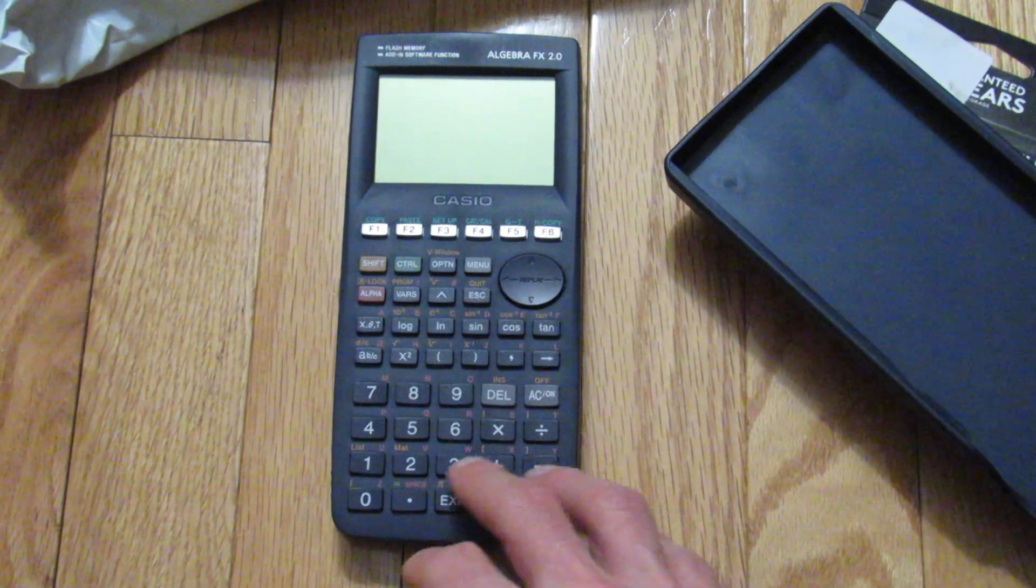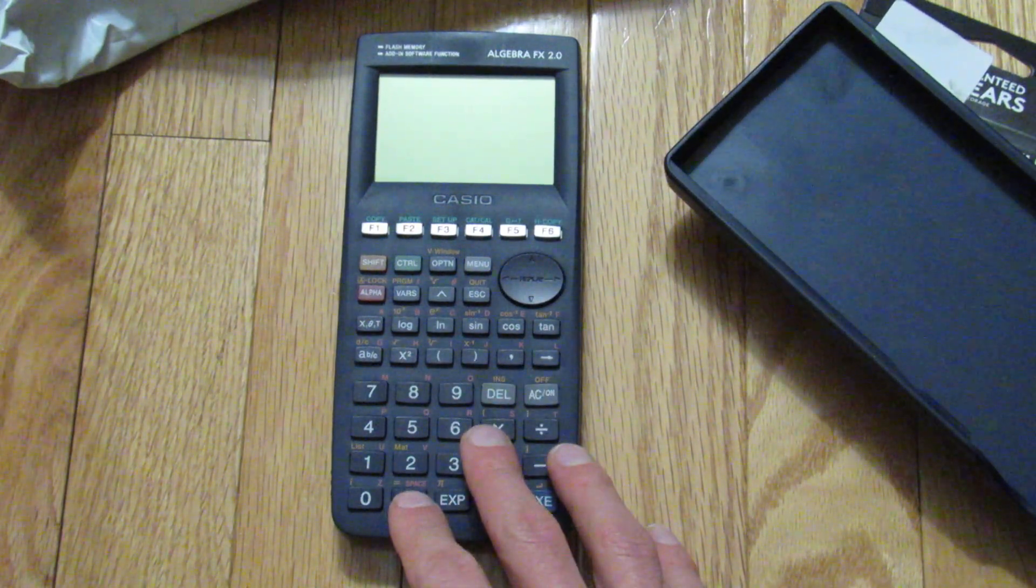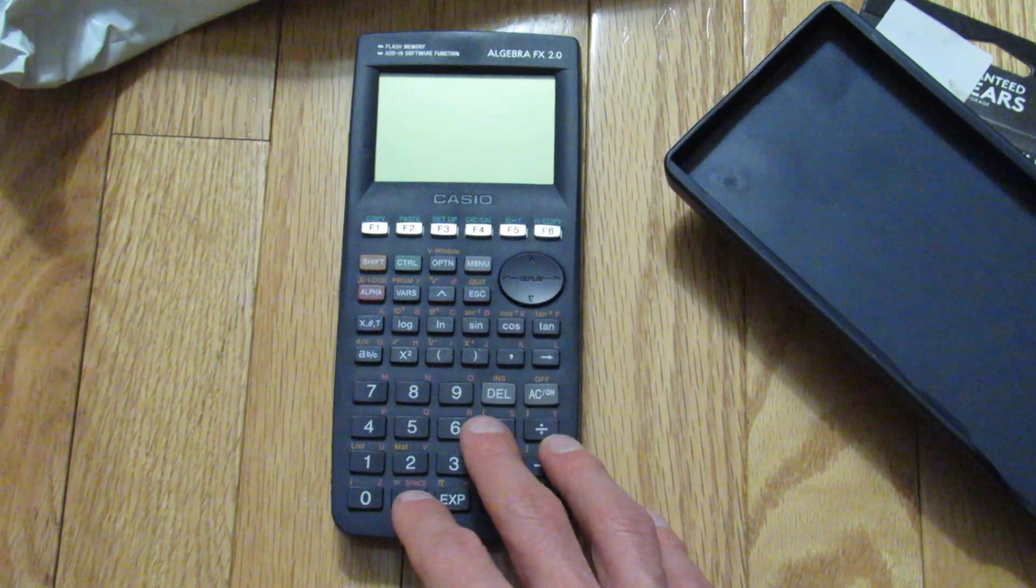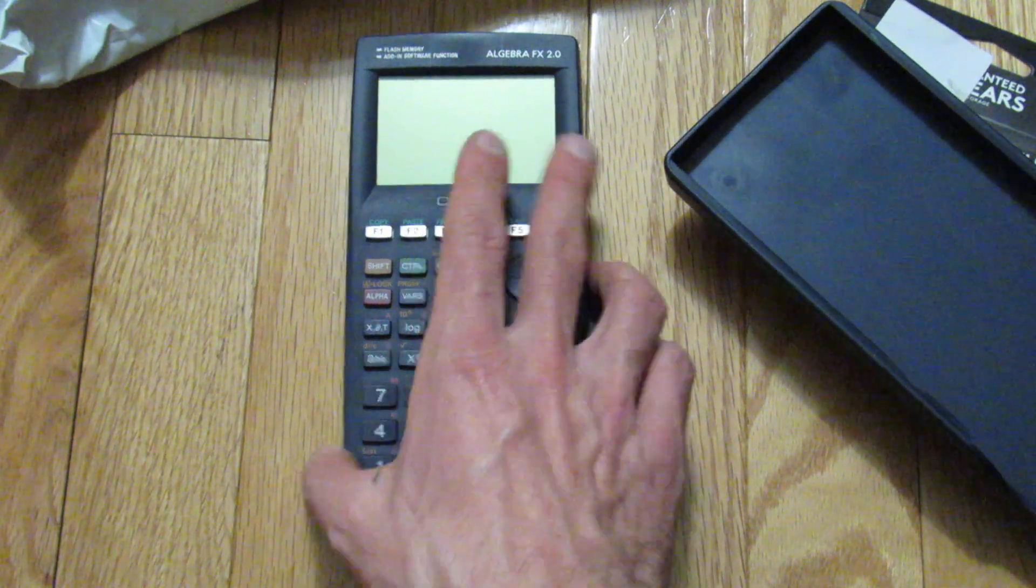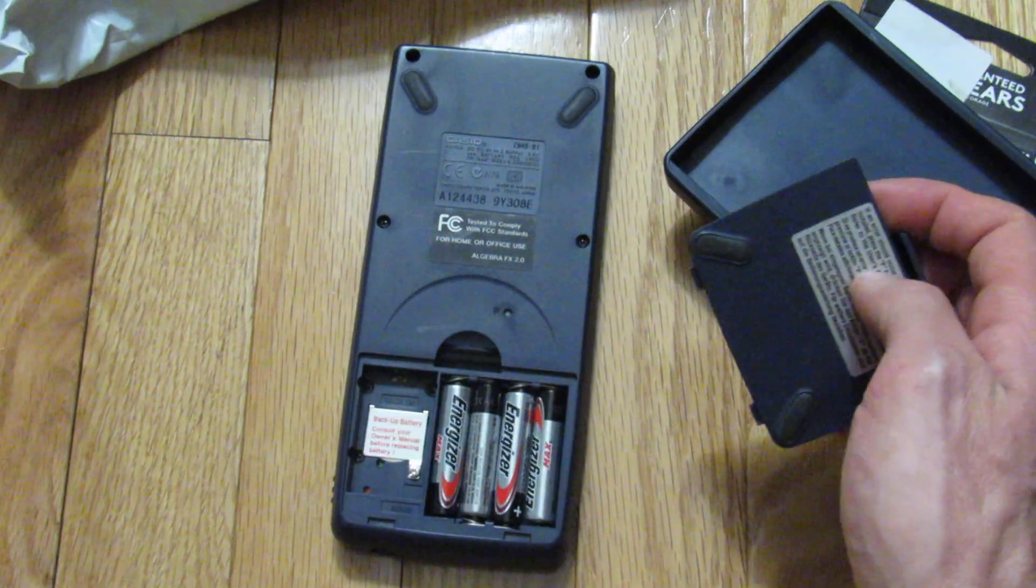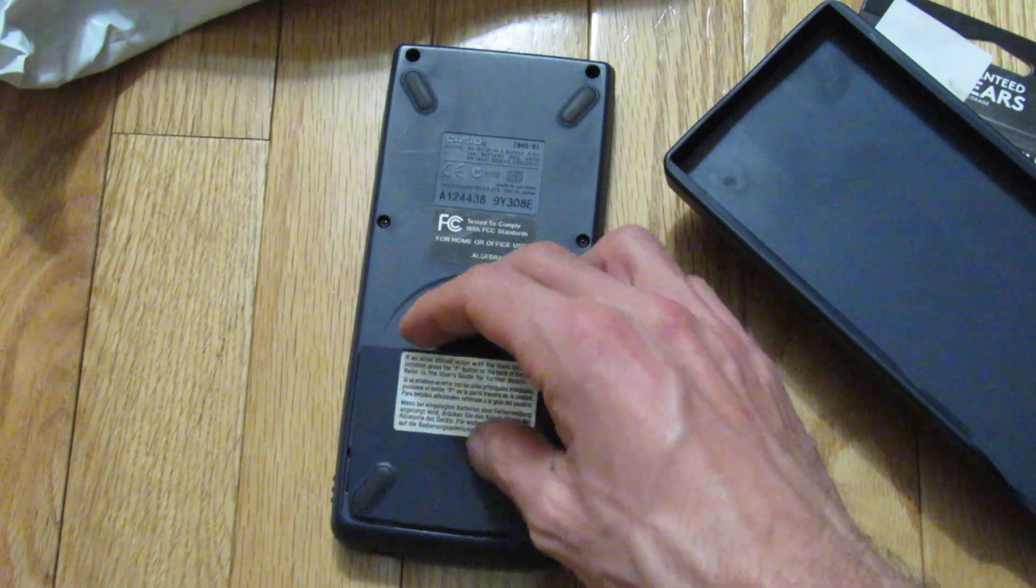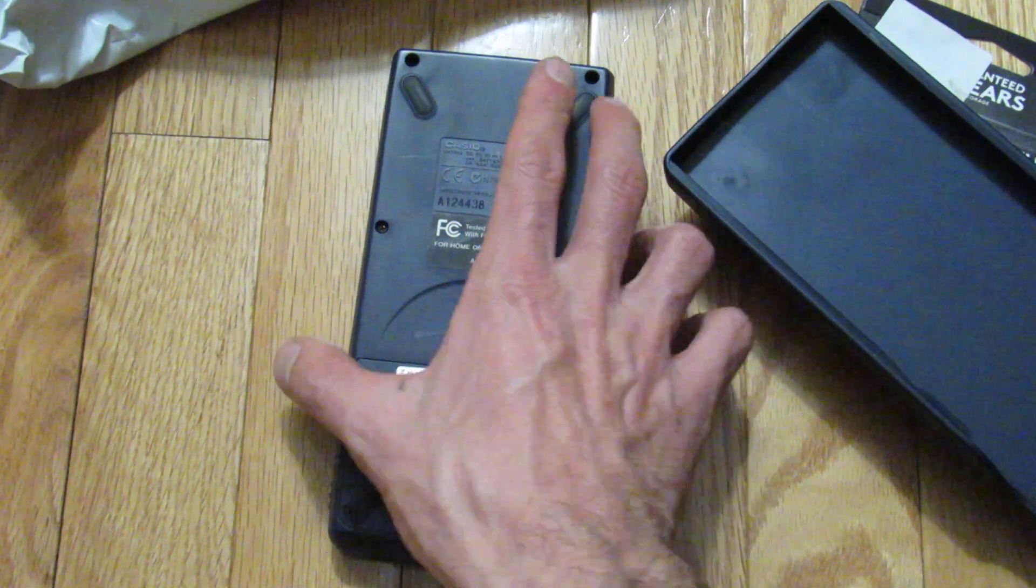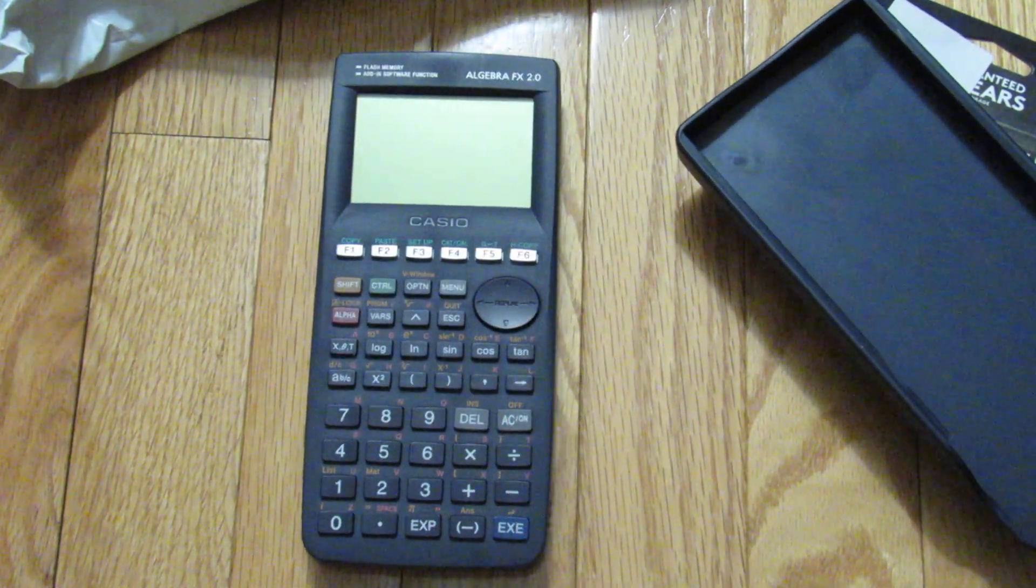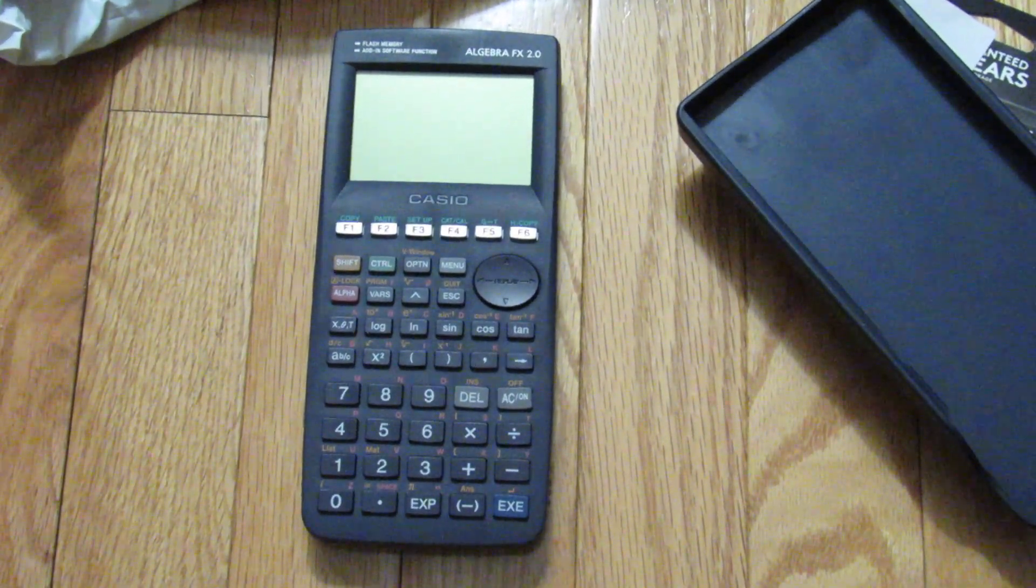It has a very similar arrangement of keys, similar key layout and function arrangement to what I saw on the FX7400 G2. It does feel like it has a sturdier build quality. I believe it runs on four AAA batteries which also has a backup battery. I'll do a more thorough video but I think this has a NEC V25 or V30 processor, essentially an 8186 compatible.